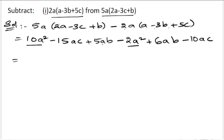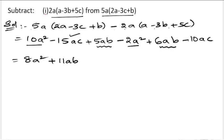We subtract 2a² from 10a² to get 8a². Next for ab: we have 5ab and 6ab, so 5 plus 6 is 11, giving 11ab. For ac: we have minus 15ac and minus 10ac, which gives minus 25ac.